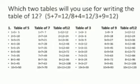So here, which two tables will you use for writing the table of 12? So first, we have to identify the possibilities which are the numbers by adding which numbers we will get the number 12. By adding which number we will get the sum 12. So one possibility 5 plus 7 is 12, 8 plus 4 is 12, 3 plus 9 is 12.